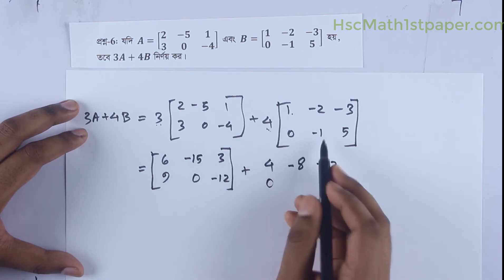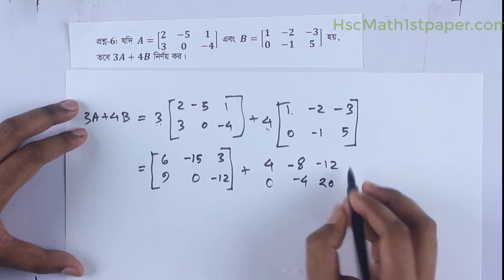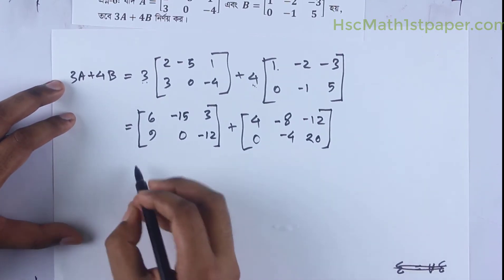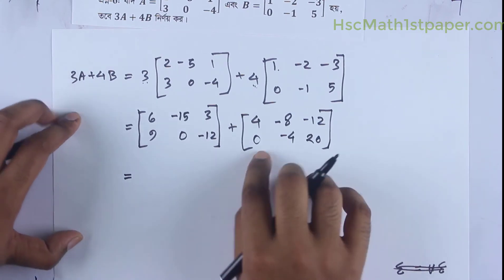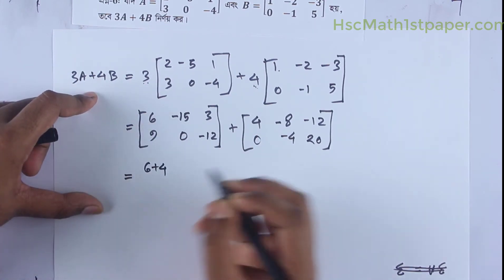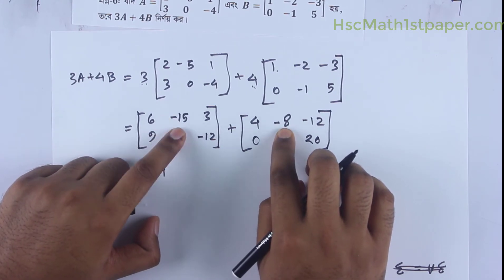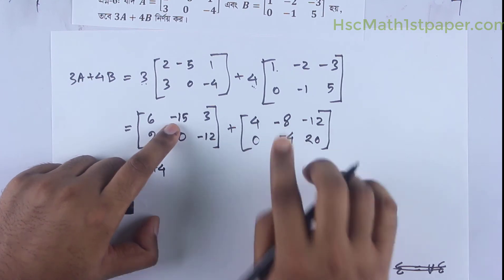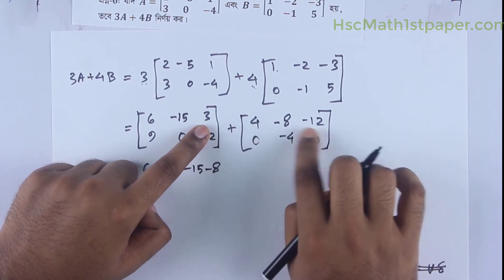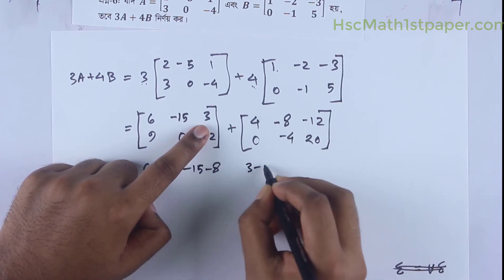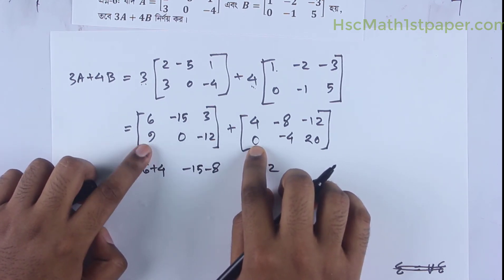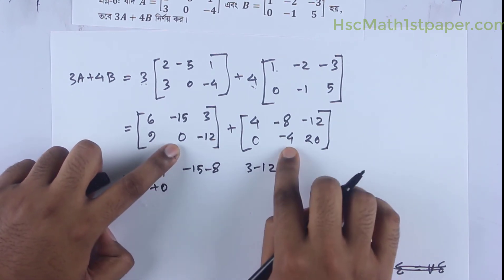Minus 0, 4 minus 1, 4 minus 4. In the second step we will get the same thing: here is 9 and here is 0, so 9 plus 0. Here is 0 and here is minus 4.